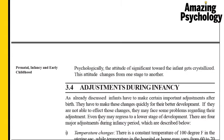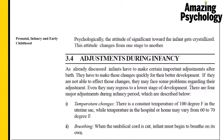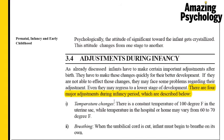When a child is born from the mother's womb and enters the world, a whole lot of adjustments have to be made. There are four major adjustments during the infancy period. The first is temperature changes. The mother's womb carries a constant temperature of 100 degrees Fahrenheit, and once the child is born into the new world the temperature may vary from 60 to 70 degrees Fahrenheit, so the child's body has to adapt to the new temperature.